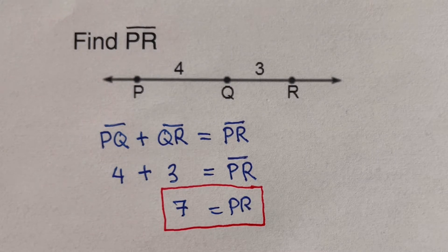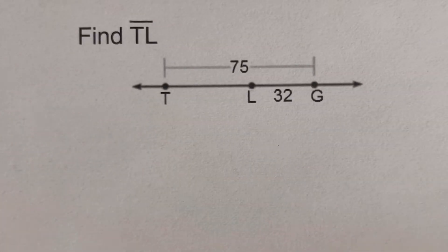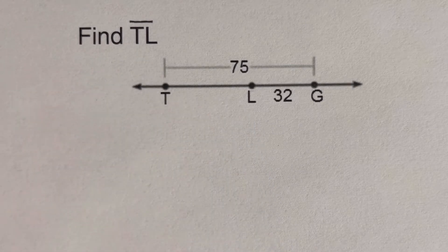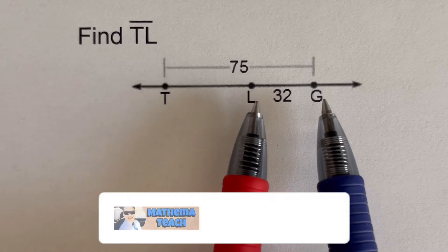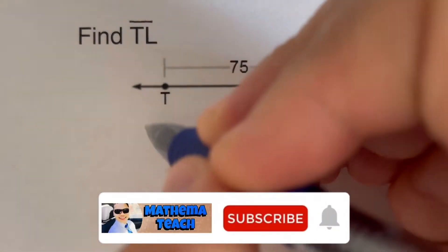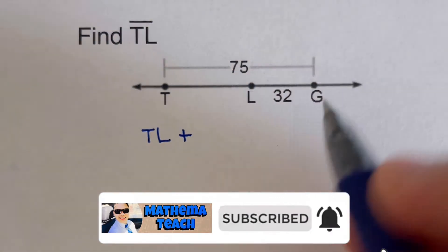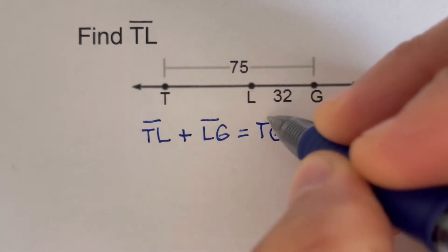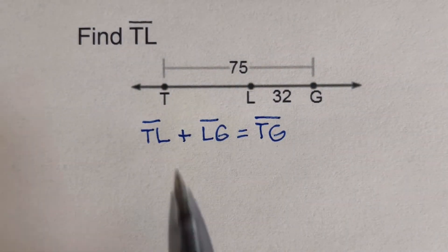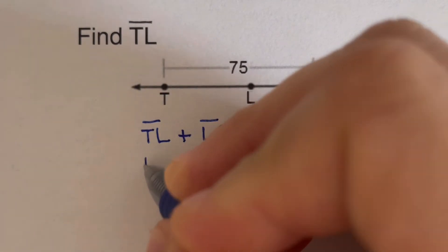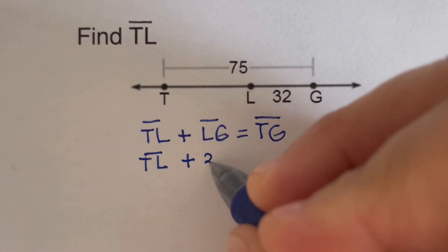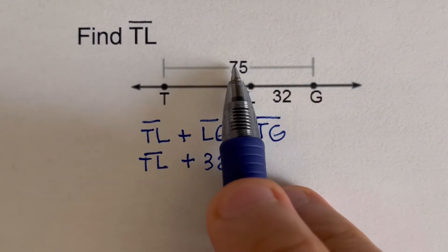Now let's move on to the next example. We're supposed to find segment TL — the missing piece. We write the formula first: first segment plus second segment equals the whole thing. That would be TL plus LG equals TG. Plugging the values in, TL is missing so we keep it as a variable, LG is 32, and TG is 75.